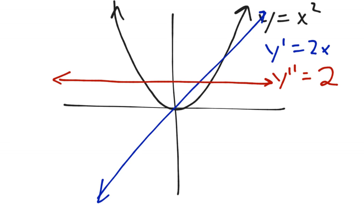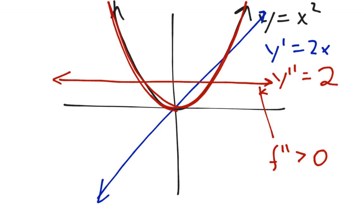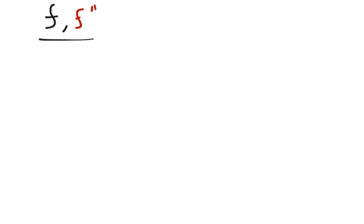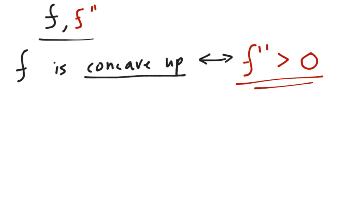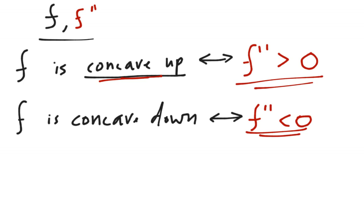Now let's also focus on the properties of the second derivative. Recall that the second derivative of x squared is just 2, so y double prime equals 2. If I graph the line y equals 2, notice that f double prime is always greater than zero. The graph of y equals x squared is always curved upwards into that happy smiley face shape. This brings us to the relationship between f and f double prime: f is concave up if f double prime is greater than zero. These two are interchangeable. Conversely, f is concave down if f double prime is less than zero.